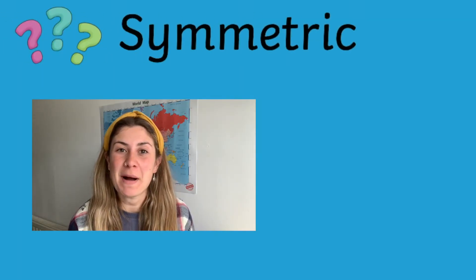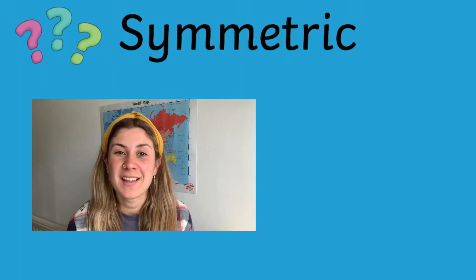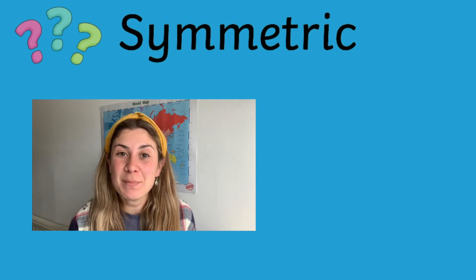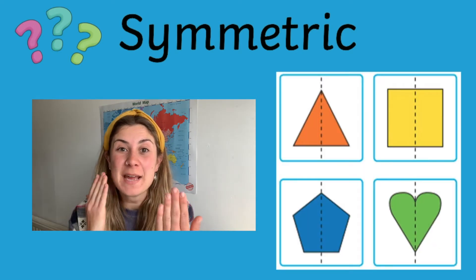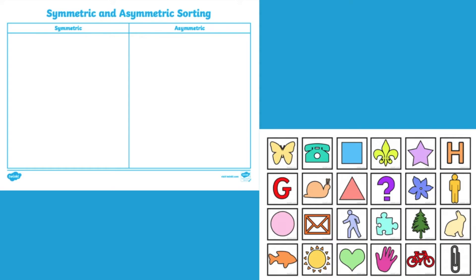So let's begin with talking about what symmetry is. If something's symmetric, it means that you can draw a line straight down the middle of it and it would be the same on both sides. On our website we have this brilliant symmetric and asymmetric sorting activity sheet.